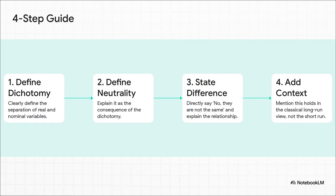Here is your four-step guide — your recipe for the perfect answer. Step one: start by defining the dichotomy. Step two: define neutrality and make sure you explain it as a consequence of the dichotomy. Step three — and this is super important — you have to explicitly say no, they are not the same, and then explain why. And finally, step four: for those bonus points that push you to the top, add that crucial bit of context — this all holds in the classical long-run view.